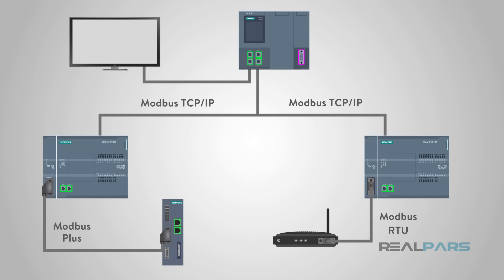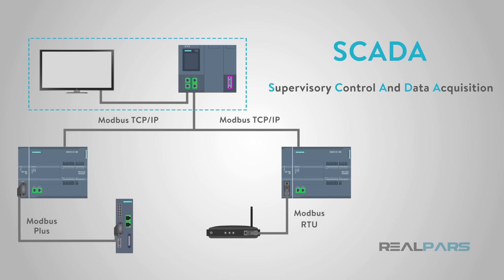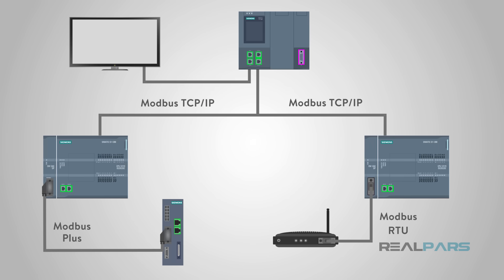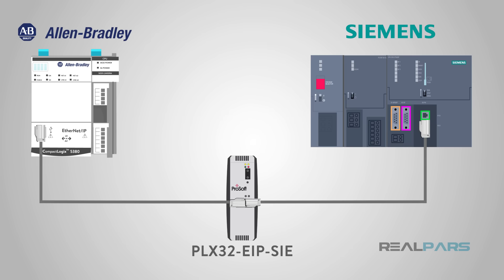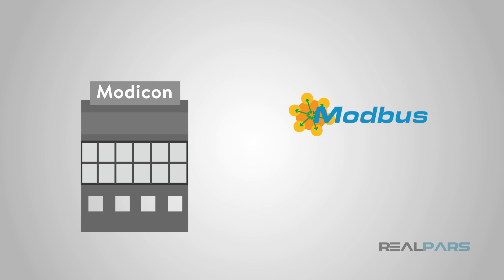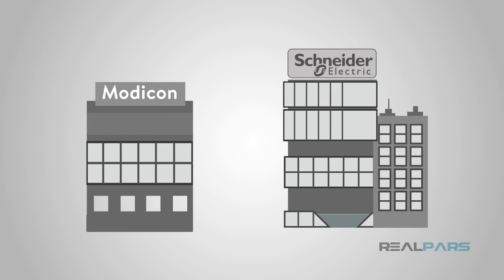The Modbus communication protocol is the oldest and by far the most popular automation protocol in the field of process automation and SCADA, or Supervisory Control and Data Acquisition. Knowing how to create Modbus-based networks is essential for any electrical technician and engineer working in these fields. Being able to integrate devices from different manufacturers is a skill that is in demand. Modbus is a communications protocol published by Modicon in 1979 for use with its Programmable Logic Controllers, or PLCs. Modicon is now owned by Schneider Electric.